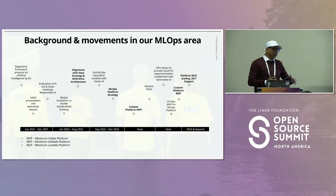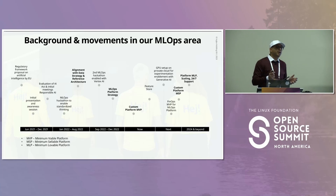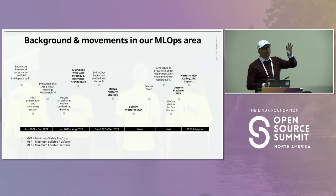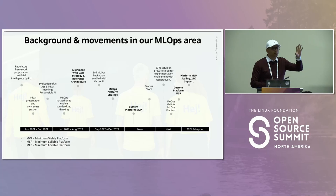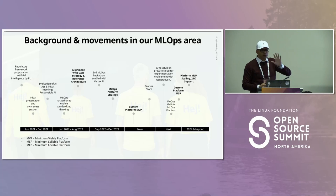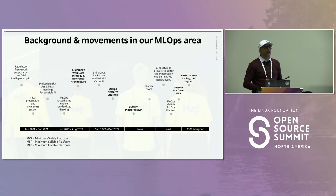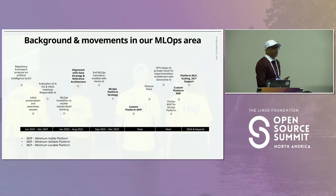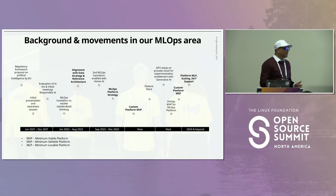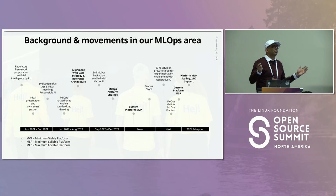Once aligned, we started small with a Minimum Viable Platform — three basic functions: can I create a model, can I deploy a model, can I observe a model? Everything pretty manual. As data scientists started using it, they provided feedback — this doesn't work, I need scale, I need GPUs, I'm doing generative AI. We evolved from MVP to MSP (minimum sellable platform, where a consumer can use it), and then toward MLP in 2024 and beyond — a scaled platform with 100, 200, 300 models hosted, which is our end goal.